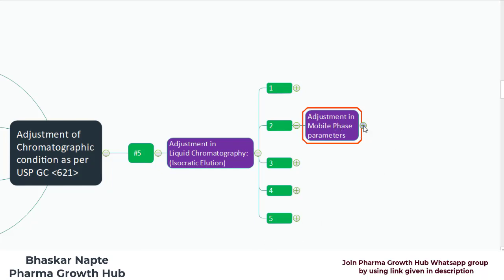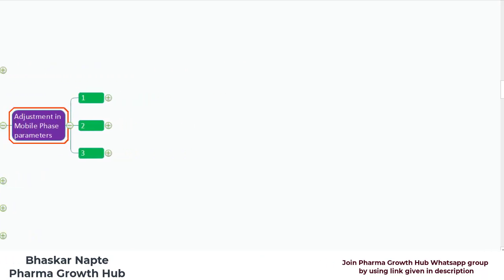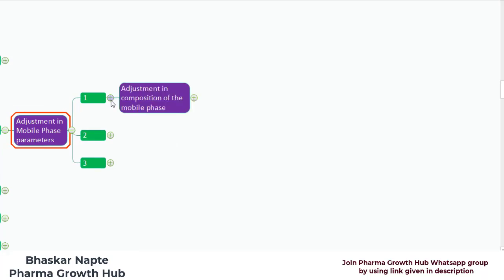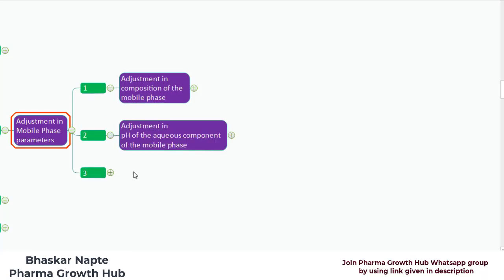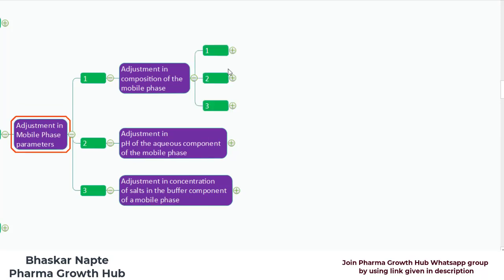Let us begin with the discussion. Here is the guidance provided by General Chapter 621 when it comes to adjustment in a mobile phase. The first point will be the adjustment in composition of the mobile phase. The second point will be the adjustment in pH of the aqueous component of the mobile phase. And the third will be adjustment in concentration of salts in the buffer component of a mobile phase.